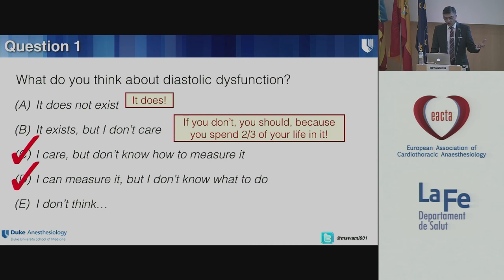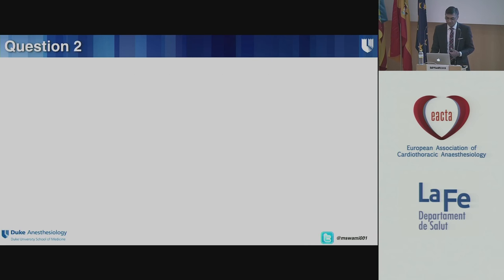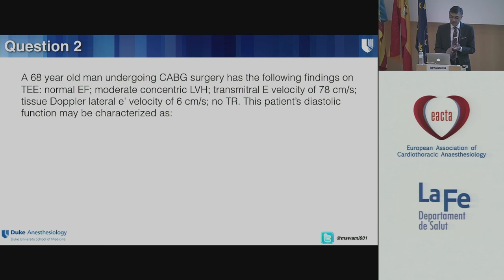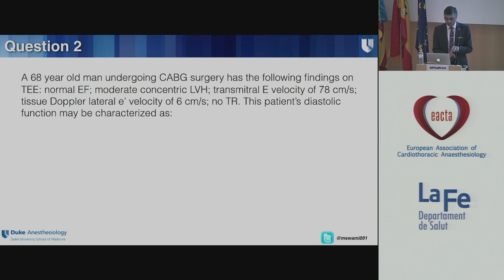I'm going to convert you if you're in category A or B to something else. Here's the second question: a 68-year-old man undergoing CABG surgery has the following findings on TEE. He has a normal ejection fraction, moderate concentric left ventricular hypertrophy, a transmitral E velocity of 78 centimeters per second, tissue Doppler lateral E prime velocity of 6 centimeters per second, and no tricuspid regurgitation.